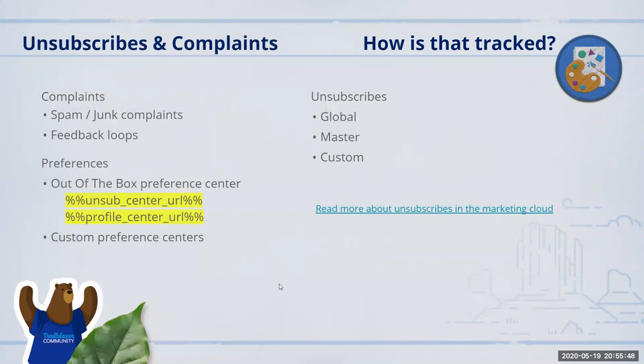Unsubscribes and complaints. Complaints are block bounces — if someone complains about you and the server has a feedback loop in place (like Yahoo or AOL, not Gmail), they'll tell you someone hit the spam button. If they complain about you one time, go ahead and remove them from your segments and mark them as someone you don't want to send to — opt them out — because you don't want them to end up as a block bounce, which could damage your reputation further. If you send to a complaint a second time, it will come back as a block bounce.